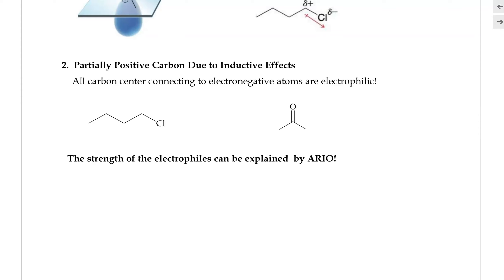Another example: substances in which a carbon carries a partially positive charge due to inductive effects. All carbons connected to an electronegative atom would also be electrophilic. For example, in a molecule with carbon bonded to chlorine, the chlorine inductively withdraws electrons away from the carbon due to high electronegativity, creating a partial positive charge on that carbon and making it a good electrophile. Another example is a carbonyl, where carbon and oxygen are double bonded — the oxygen withdraws electrons inductively from the carbon, making that carbon partially positive and a good electrophile.